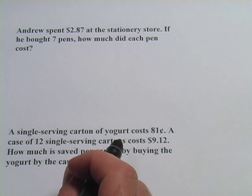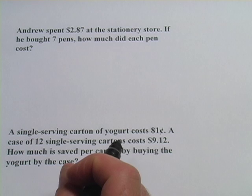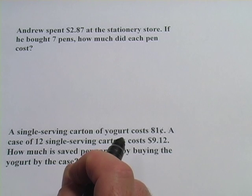It might say the big jug is $0.32 per ounce and the little jug is $0.35 per ounce. If that was the case, then the bigger jug is a better deal because it's less per ounce.